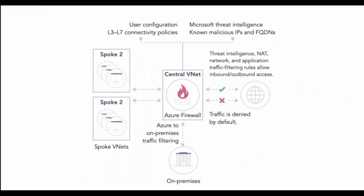As you'll notice in the diagram here, threat intelligence is mentioned. Threat intelligence-based filtering, when enabled, means our firewall can alert us and deny traffic to and from known malicious IP addresses and domains.